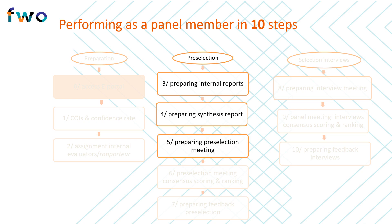This step is followed by step 5, in which all reviews and synthesis reports are shared with the entire panel. In the days leading up to the online pre-selection meeting, the panel receives a summary of all individual reviewers' scores and is requested to prepare for the meeting. You will receive an overview of the preliminary ranking of the candidates based on rapporteur scores and a brief analysis of the scores, allowing you to identify any areas of concern that should certainly be discussed during the meeting.